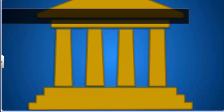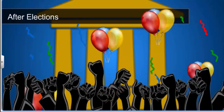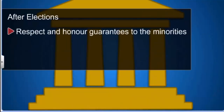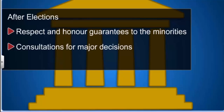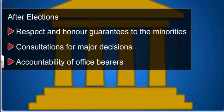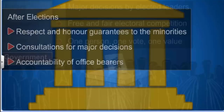There should also be an independent judiciary to protect the rights of citizens without any political pressure. Winning an election does not entitle a democratic government to do whatever it likes — it needs to respect and honor guarantees to minorities. Major decisions cannot be taken without consultations at every step. All office bearers are assigned rights and responsibilities by the constitution and law, and are accountable to the public as well as to independent officials. A democratic government rules within the limits set by constitutional law and citizens' rights — that is the fourth and final feature of a democracy.